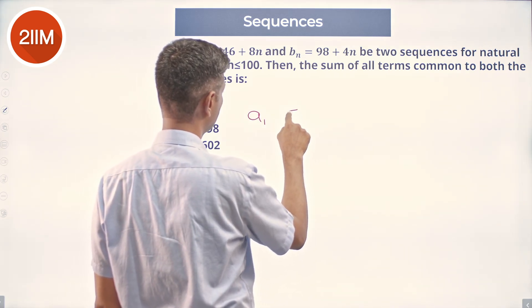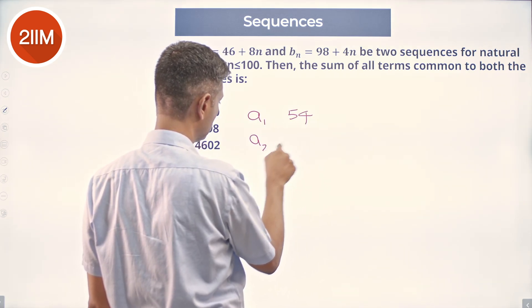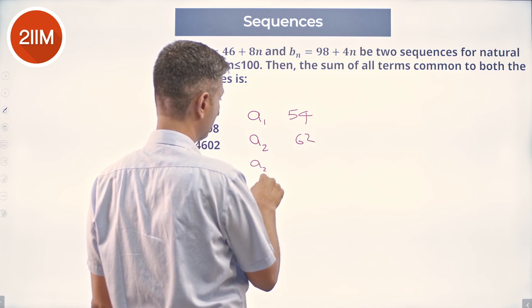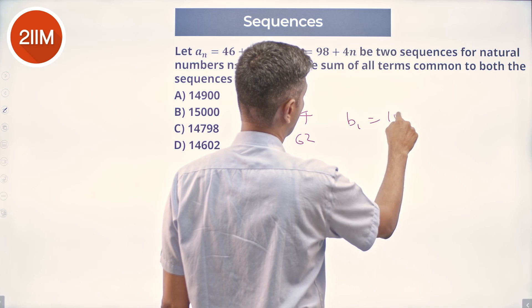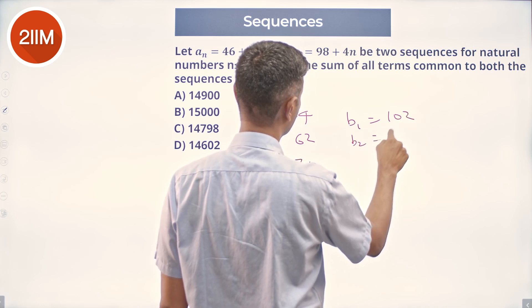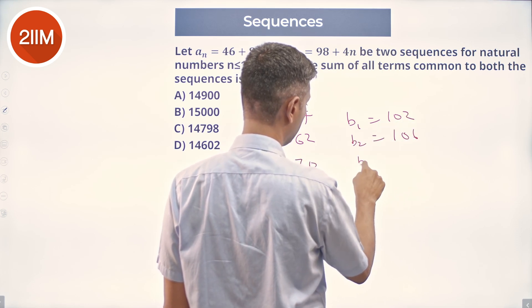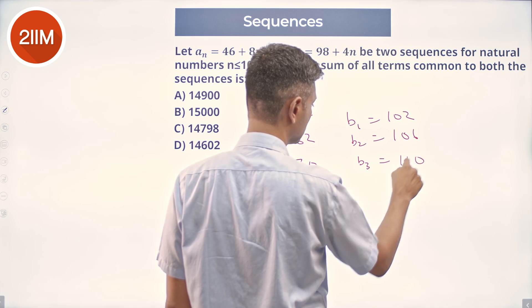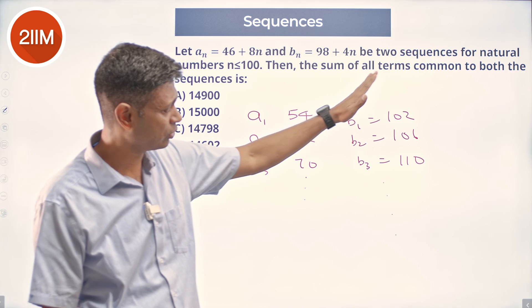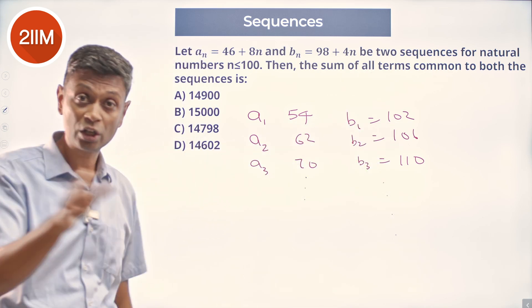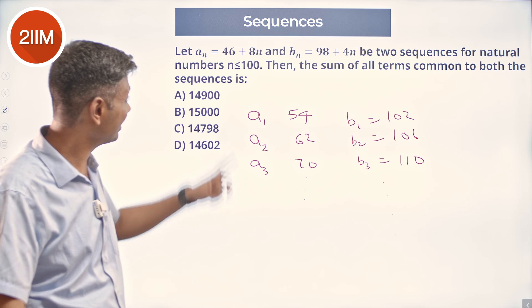a_1 is 46 plus 8, which is 54. a_2 is 62, a_3 is 70, and so on. b_1 is 102, b_2 is 106, b_3 is 110, and so on. This goes in step size of 8, this goes in step size of 4. We have to find sum of all terms common to both of them.